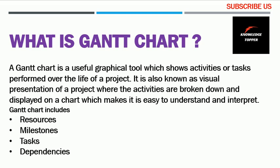A Gantt chart includes resources, milestones, tasks to be performed, and dependencies. Regarding resources: using a Gantt chart, you know that at a specific point in time you will require wooden shuttering for rooftop construction, so you order it in advance — before you actually need it — to make it available on the required date so your other work is not affected. Regarding milestones: at different points in time you can assess that 30% or 50% of your work has been completed.